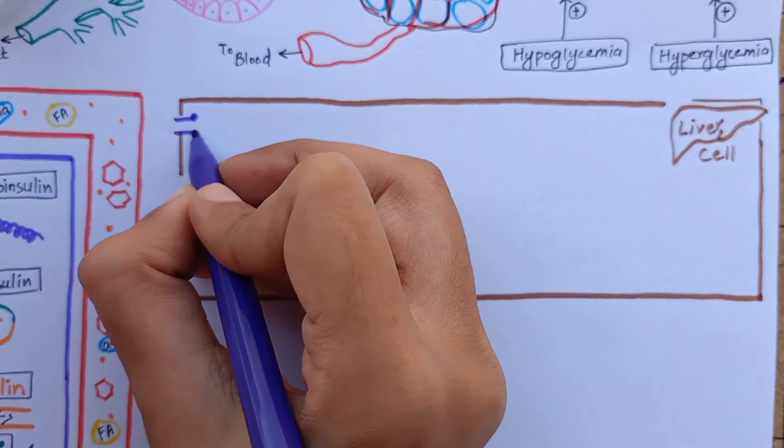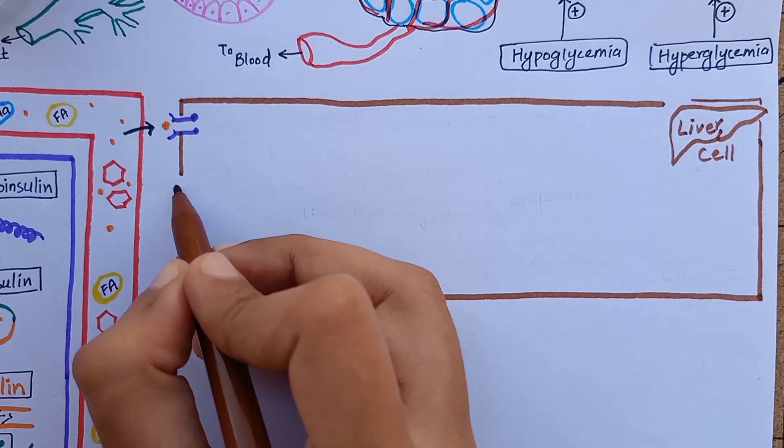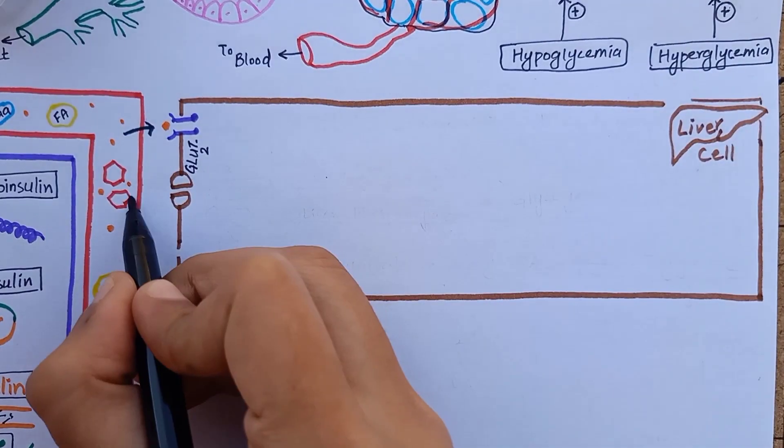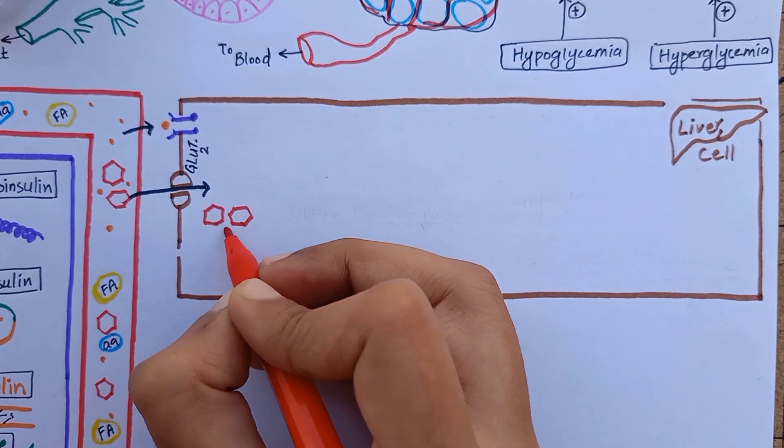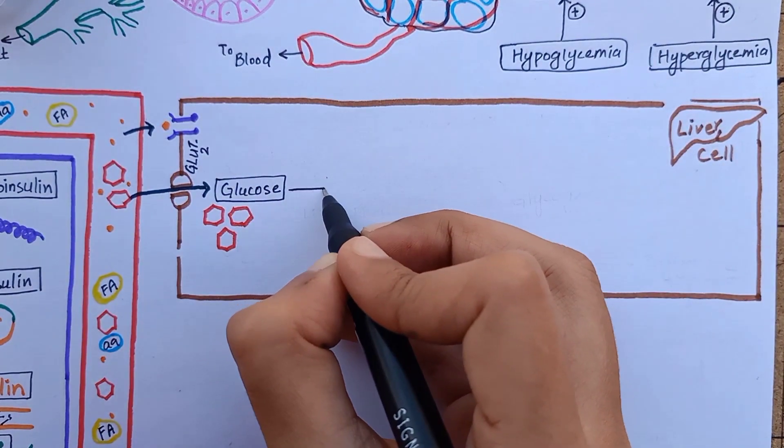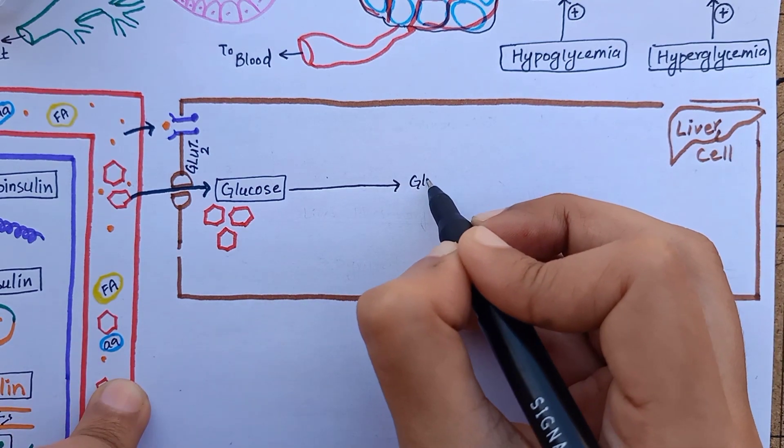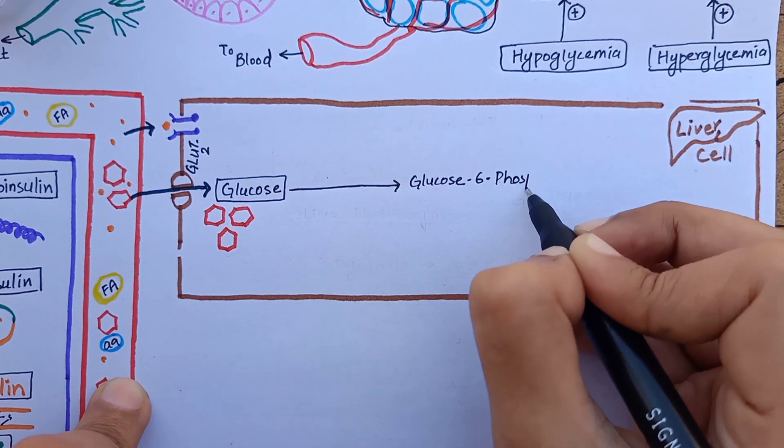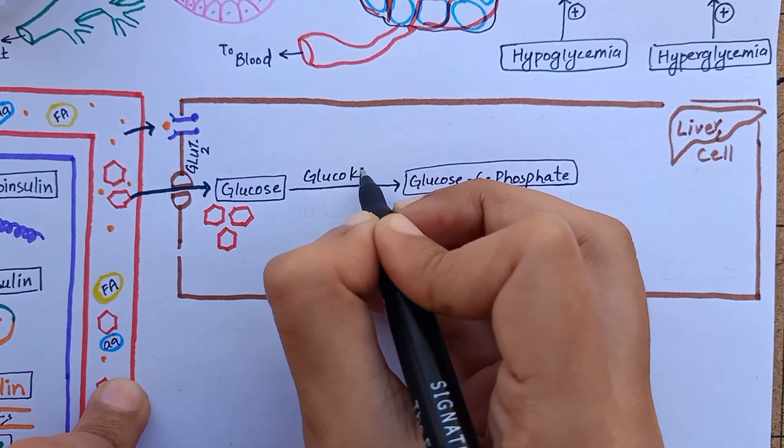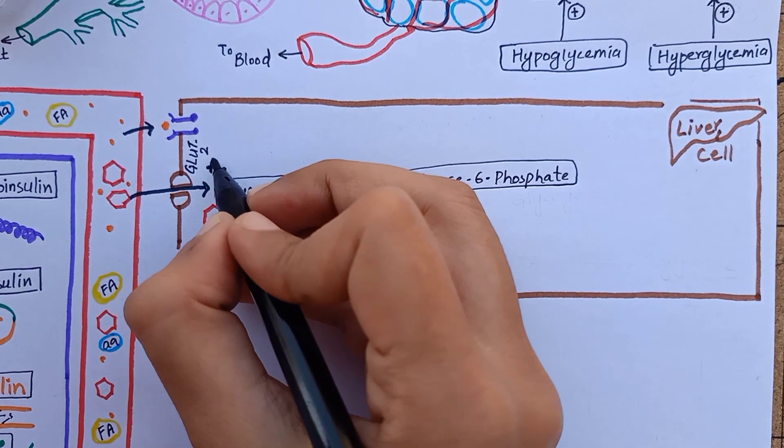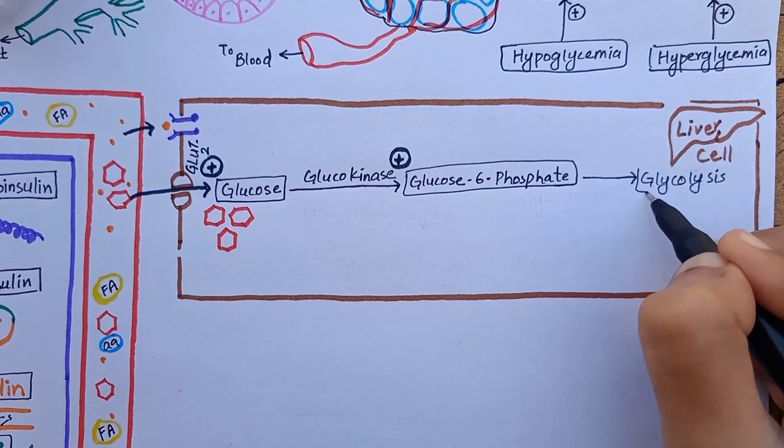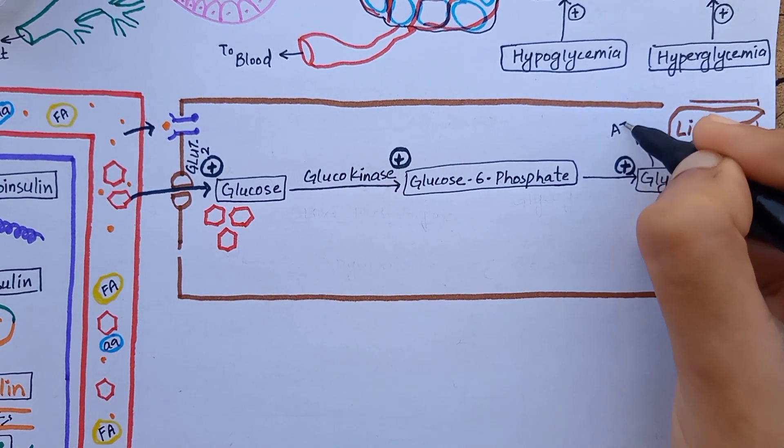In liver, there are GLUT2 transporters on cell membrane, which means that it is independent of insulin as it was on pancreatic beta cells. As liver cells uptake glucose from blood during the fed state, insulin causes increased activity of enzyme glucokinase. Glucokinase causes initial phosphorylation of glucose to glucose-6-phosphate. Phosphorylated glucose cannot diffuse back through cell membrane, so glucose is temporarily trapped inside the liver cells. This undergoes glycolysis to release energy that can be used by cell.